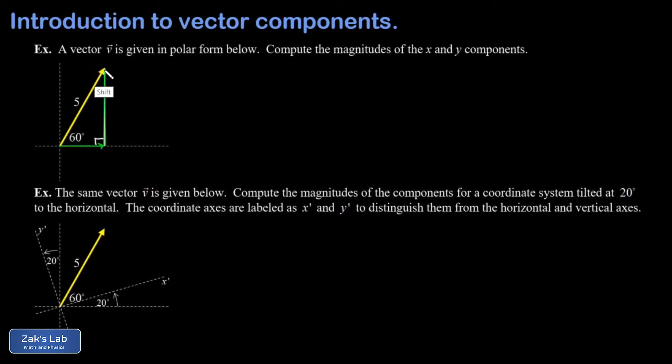We'll just drop a vertical line right here to form a right triangle. My x component looks like this and my y component looks like this. Then to find the magnitudes of these things we have to use right triangle trigonometry. We know the cosine of 60 degrees is going to be the adjacent side of this triangle divided by the hypotenuse.